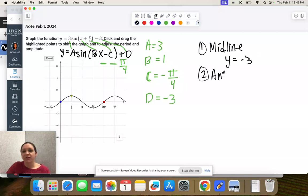And then step 2, we're finding the amplitude. That's just a, it's actually the absolute value of a, but ours is already positive, so it's 3. So I'm going to go to my graph and move my blue point down to the midline, which is at negative 3.